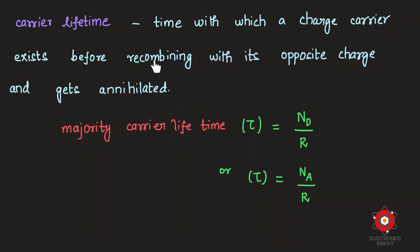Carrier lifetime τ is the time a charge carrier exists before recombining with its opposite charge and getting annihilated — from the moment of generation to the moment of recombination. It is denoted as τn₀ or τp₀ depending on the semiconductor type, and is equivalent to the doping concentration divided by the recombination rate.